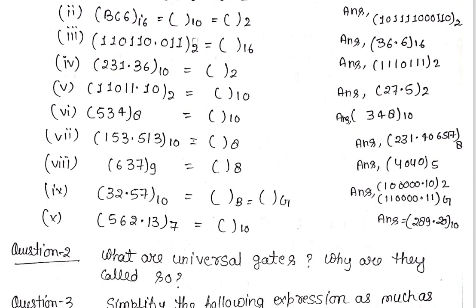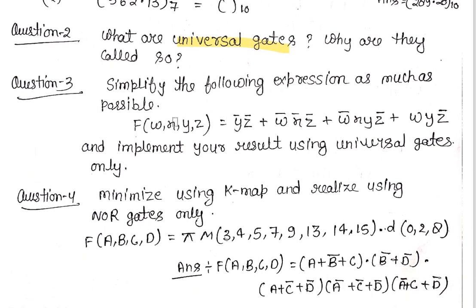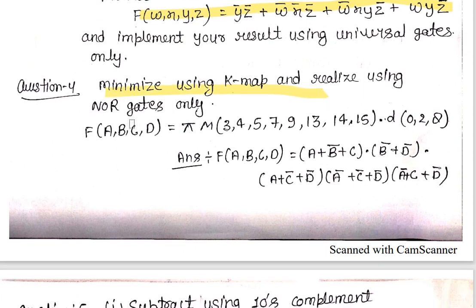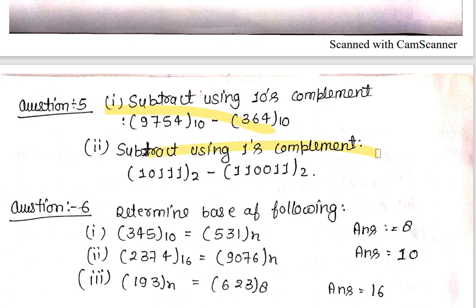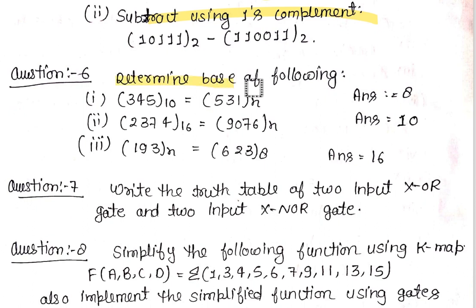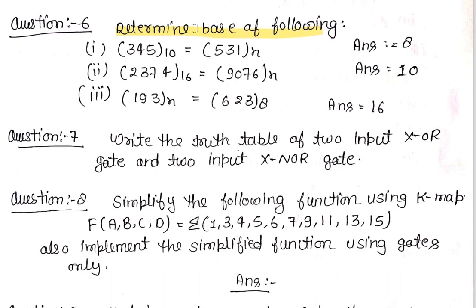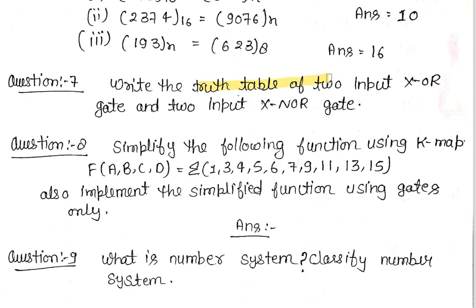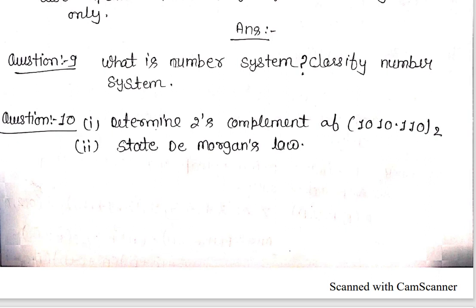Binary, hexadecimal, and octal conversions are very easy — the whole unit is on digital. Question number 2: what are universal gates — study those. Also study K-map to minimize expressions using NOR gates. Study 2's complement and 1's complement questions, and how to determine the result. Also construct truth tables and implement using logic gates.